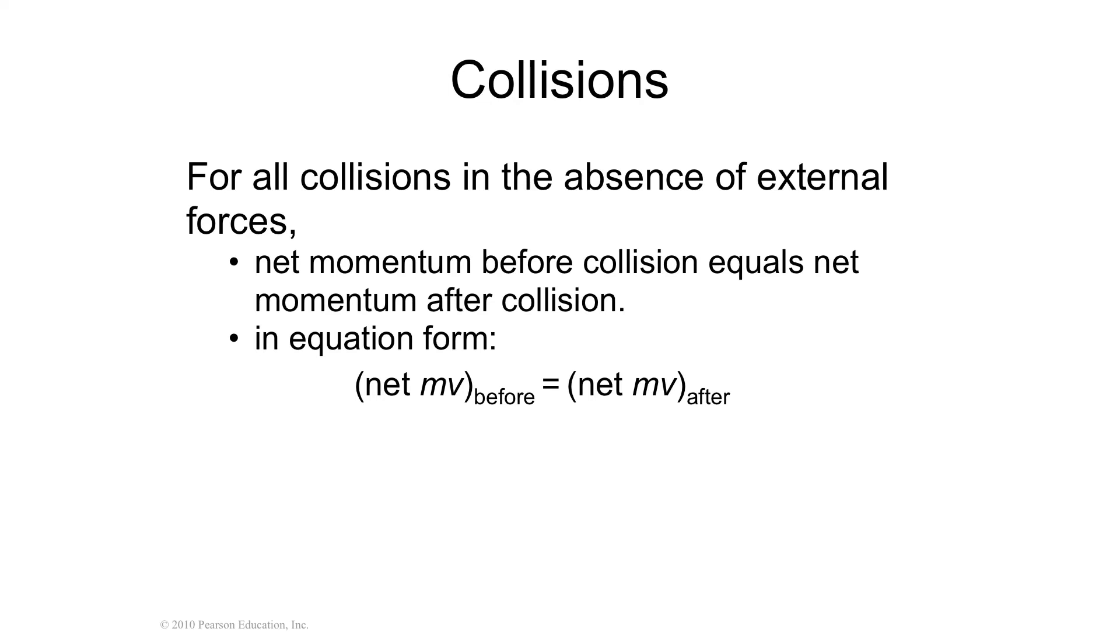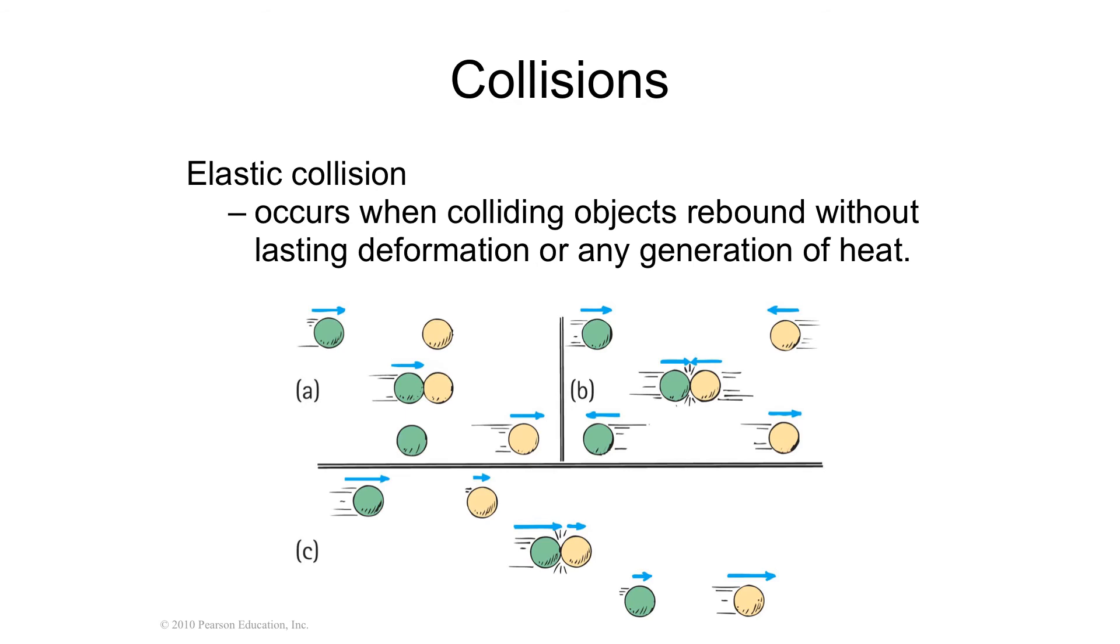All right, so let's look at some other examples. So an elastic collision, again, is when they collide, they rebound without deformation or generating any heat. Exactly the same amount of momentum at the beginning was at the end.